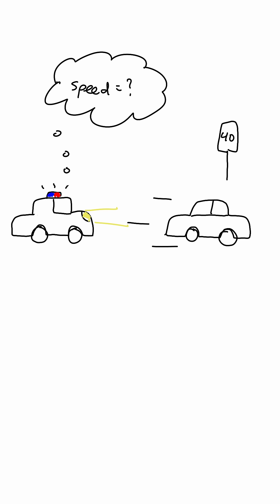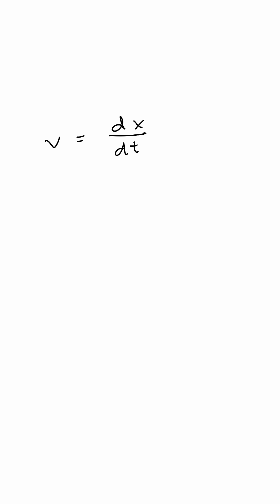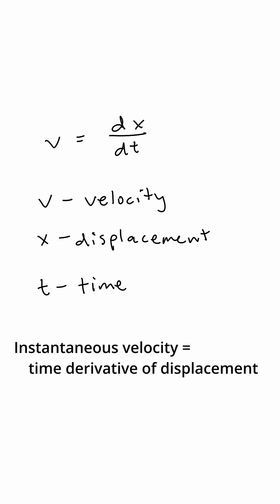So to find the speed in the cop scenario, we have to use this equation, v equals dx over dt. v is velocity, x is displacement, and t is time. This equation says that the instantaneous velocity is equal to the time derivative of displacement.